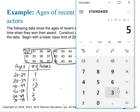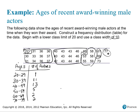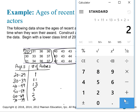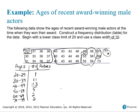Adding the frequencies: 1 plus 13 plus 5 plus 2 plus 2 gives 34. Counting the data elements in the original table also gives 34. That verifies that I have counted all of the data elements correctly and the frequency distribution table is complete.